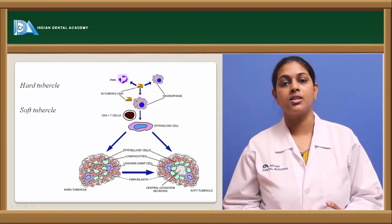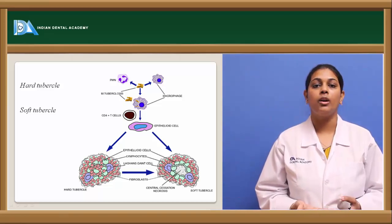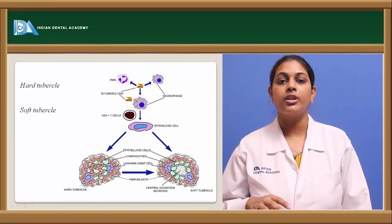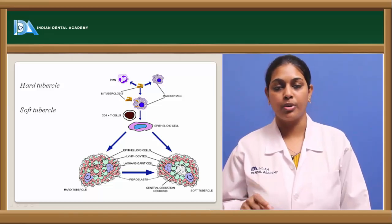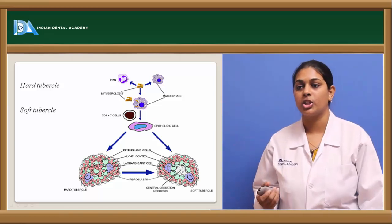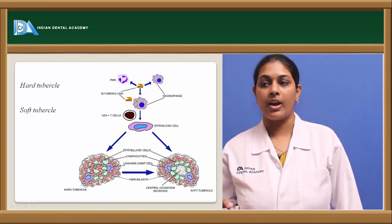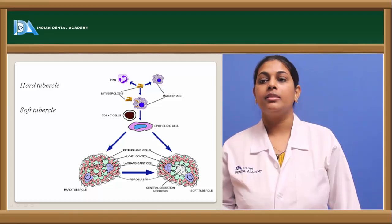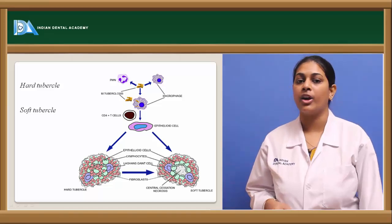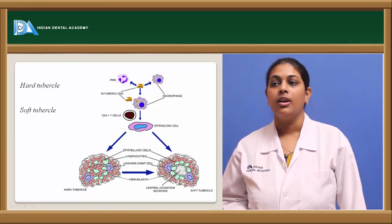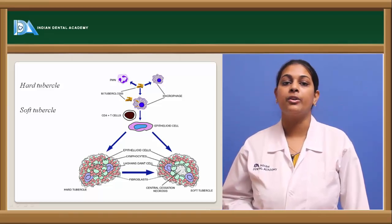As the hard tubercle progresses, caseation necrosis occurs in the cells at the center. Because of its soft consistency, it is known as a soft tubercle. The picture shows a hard tubercle with epithelioid cells, Langhans giant cells, lymphocytes, and fibroblasts — epithelioid cells within the cavity and lymphocytes and fibroblasts peripherally. In a soft tubercle, there is central caseation necrosis, giving a soft consistency, produced by the action of CD4 T lymphocytes releasing cytokines.